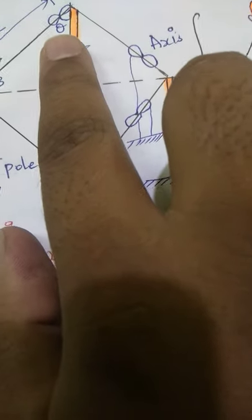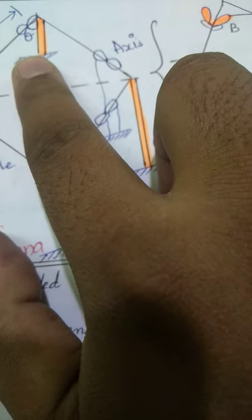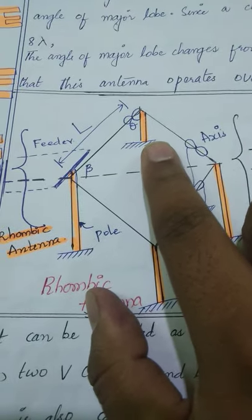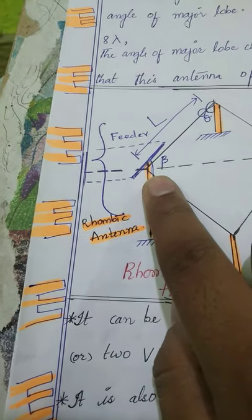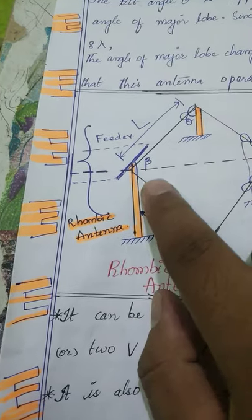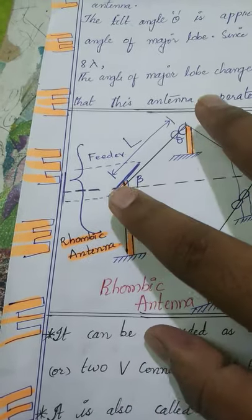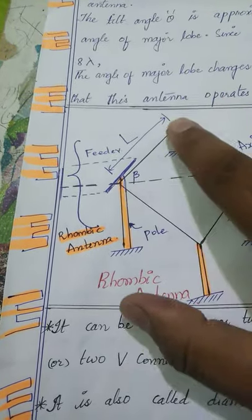It has a tilt angle theta. What is this tilt angle and how can you find it? The tilt angle theta is approximately equals to 90 degrees minus the angle of major lobe. What is the angle of major lobe we are considering? We are considering beta. So we are considering these two parameters and we are going to check the length. What is the length of these two specimens? It consists of the length L.